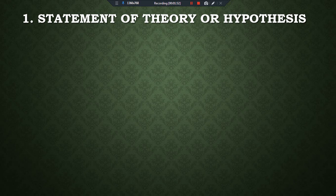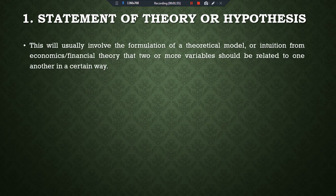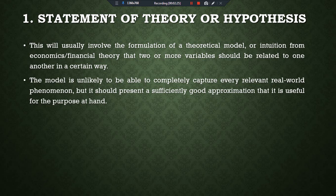The first step is the statement of theory or hypothesis. We develop a theory to determine whether a relationship between variables exists or not. This usually involves formulating a theoretical model from economics or financial theory stating that two or more variables should be related in a certain way. The model won't capture every real-world phenomenon, but should present a sufficiently good approximation useful for the purpose at hand.